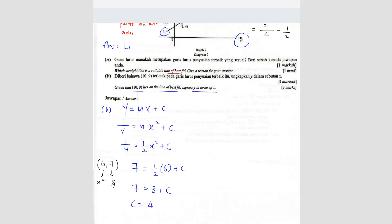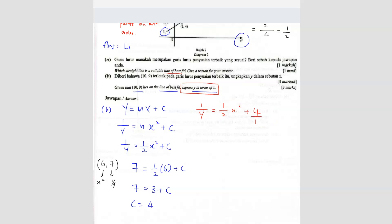So the equation is 1 over Y equals 1 over 2 X-square plus 4. But we want to express Y in terms of X, so Y must be the subject. Combining into a single fraction: 1 over Y equals X-square plus 8 over 2. Flipping the fraction gives Y equals 2 over X-square plus 8. This is your final answer.